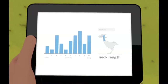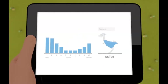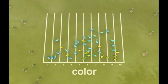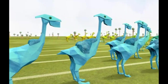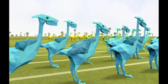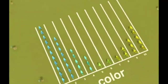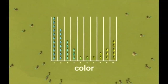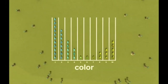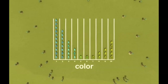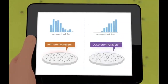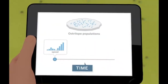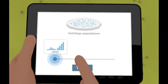The taller the bar in the graph, the more organisms have that neck length. This type of graph is called a histogram. If the ostrilopes are grouped by a different feature, the shape of the histogram changes. Now lining up by color, one quick look shows that most of the ostrilopes are blue, some are yellow, and a small amount are green. Histograms help biologists understand variation in a population and are useful for comparing populations or investigating how they change over time.